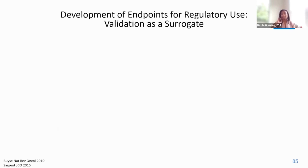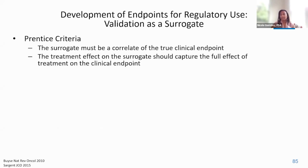There are various considerations when thinking about development of an endpoint for regulatory use. Historically, the Prentiss criteria has been put forth as a statistical operational criteria to validate potential surrogates. It can be summarized as: one, the surrogate must be a correlate of the true clinical endpoint, and two, the treatment effect on the surrogate should capture the full effect of treatment on the clinical endpoint — essentially that treatment is irrelevant for predicting the true clinical outcome if you know the surrogate outcome. However, Prentiss criteria are generally thought to be too stringent and not attainable, so other statistical methods have been developed, and one approach frequently used relies on meta-analysis.